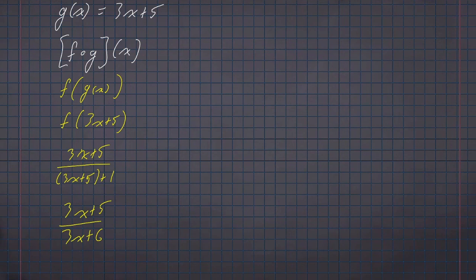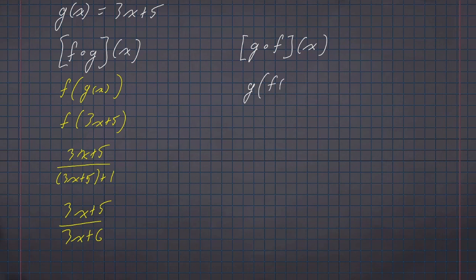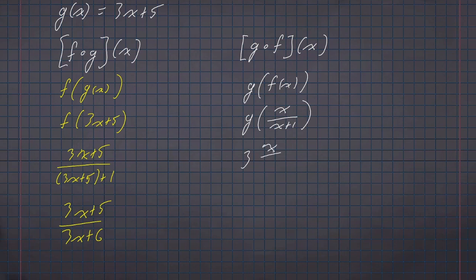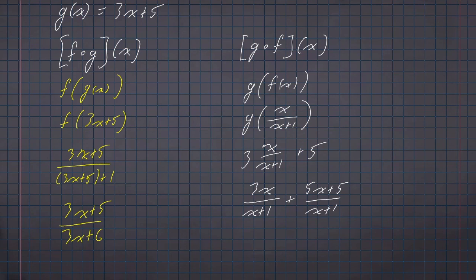We can also perform this composition in the other order. For g composed with f of x, we evaluate g at f of x. f of x is x over x plus 1, so g of f of x is 3 times x over x plus 1, plus 5. Rewriting 5 as 5(x plus 1) over x plus 1 gives us 3x over x plus 1 plus 5x plus 5 over x plus 1, resulting in 8x plus 5 over x plus 1 — a drastically different function than we had with f composed with g.